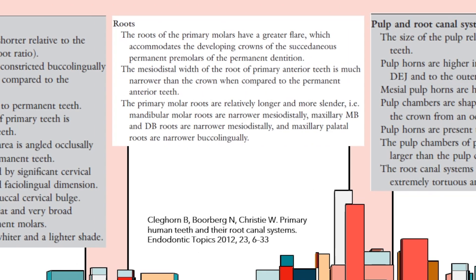The roots of primary molars have a greater flair, allowing accommodation of the developing crowns of the succedaneous permanent premolars. The mesiodistal width of the root of the primary anterior teeth is much narrower than the crown compared to permanent anterior teeth. Primary molar roots are relatively longer and more slender — mandibular molar roots are narrower mesiodistally, maxillary mesiobuccal and distobuccal roots are narrower mesiodistally, and maxillary palatal roots are narrower buccally-lingually.